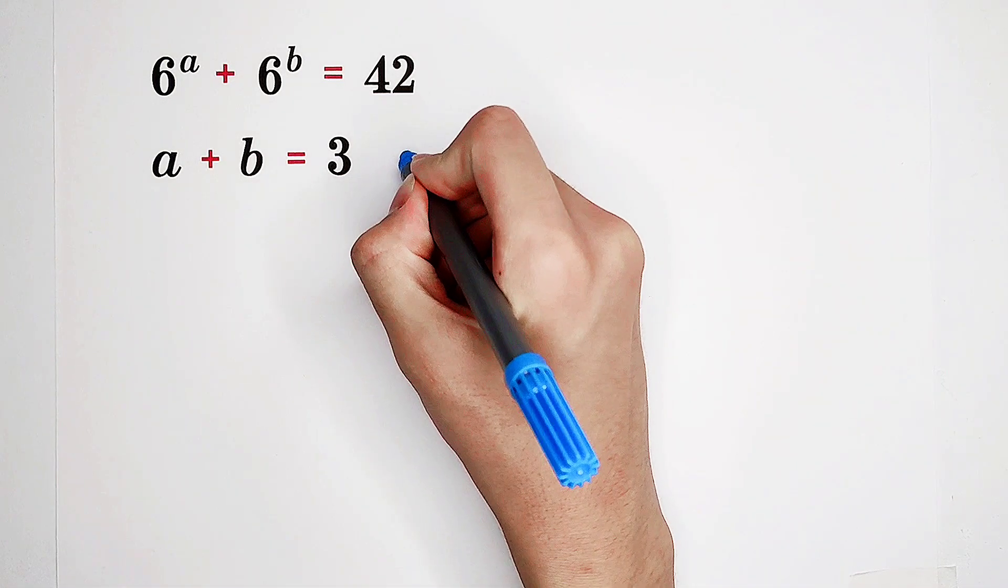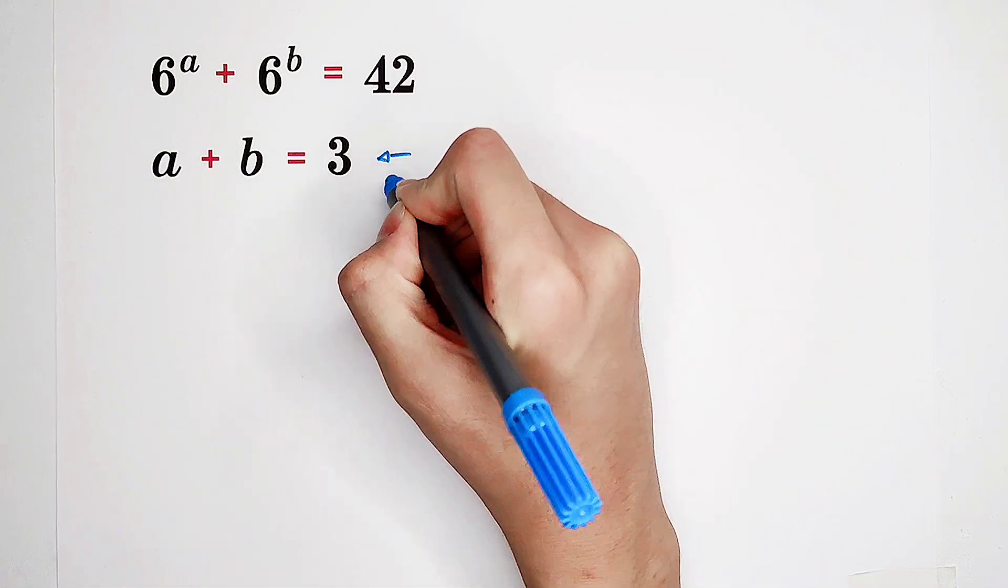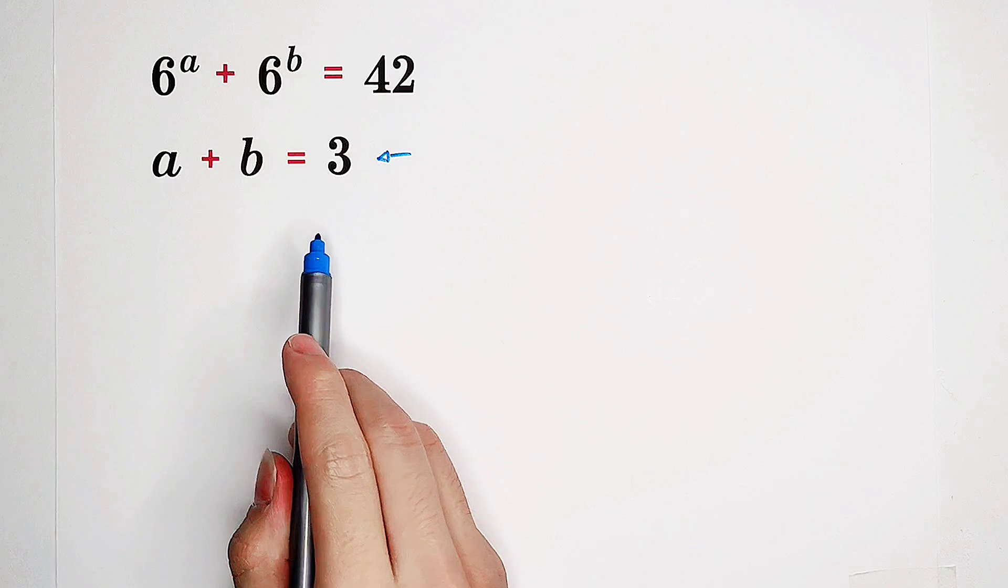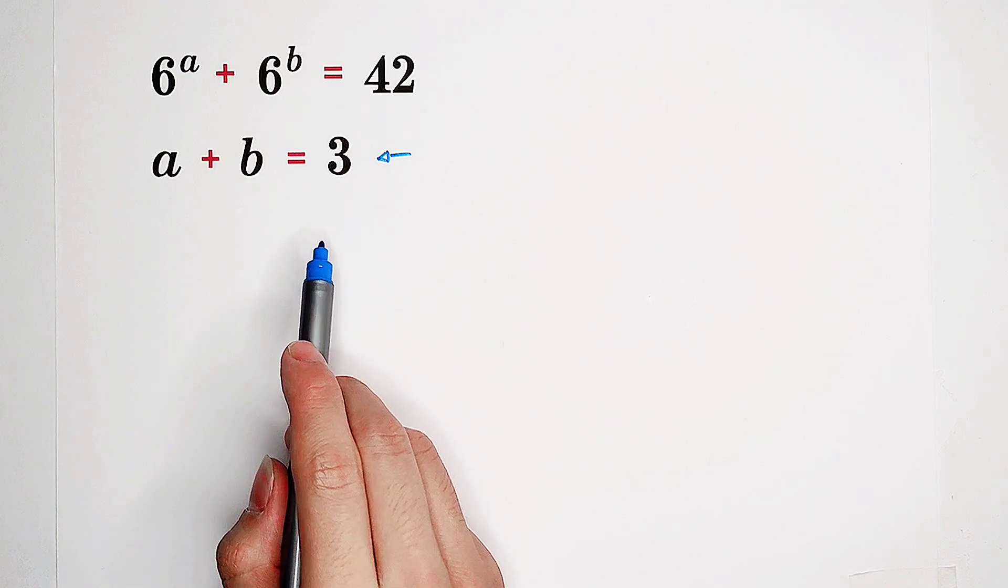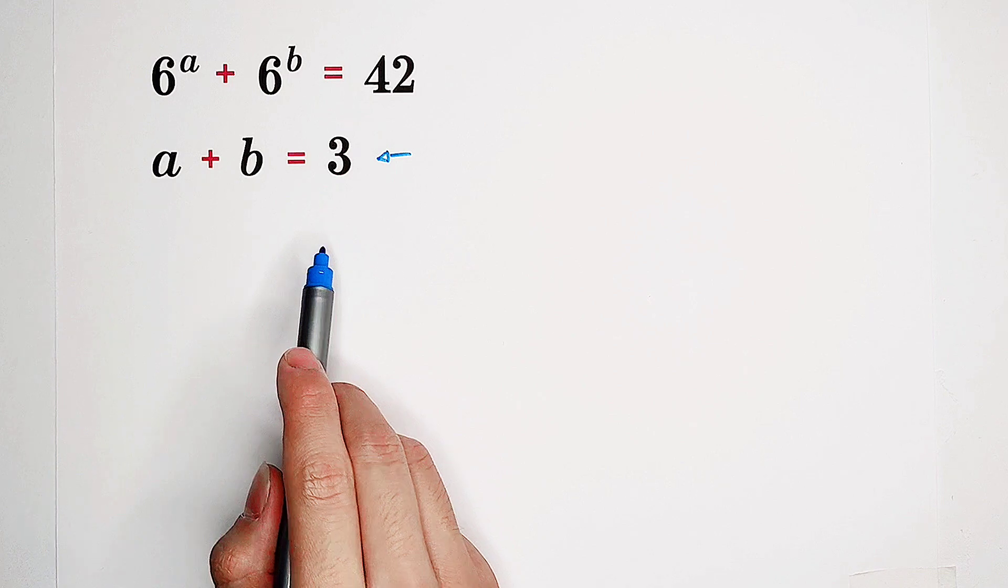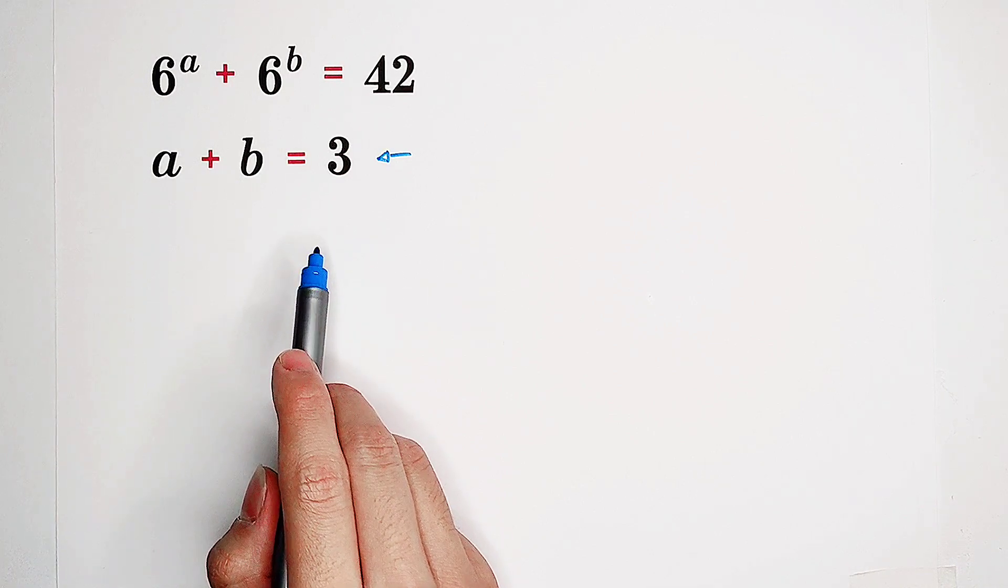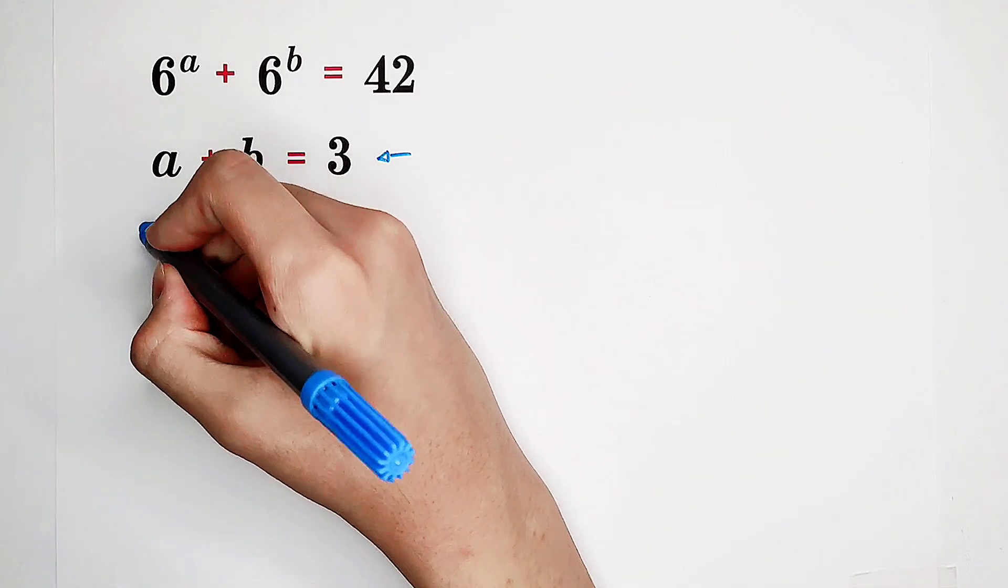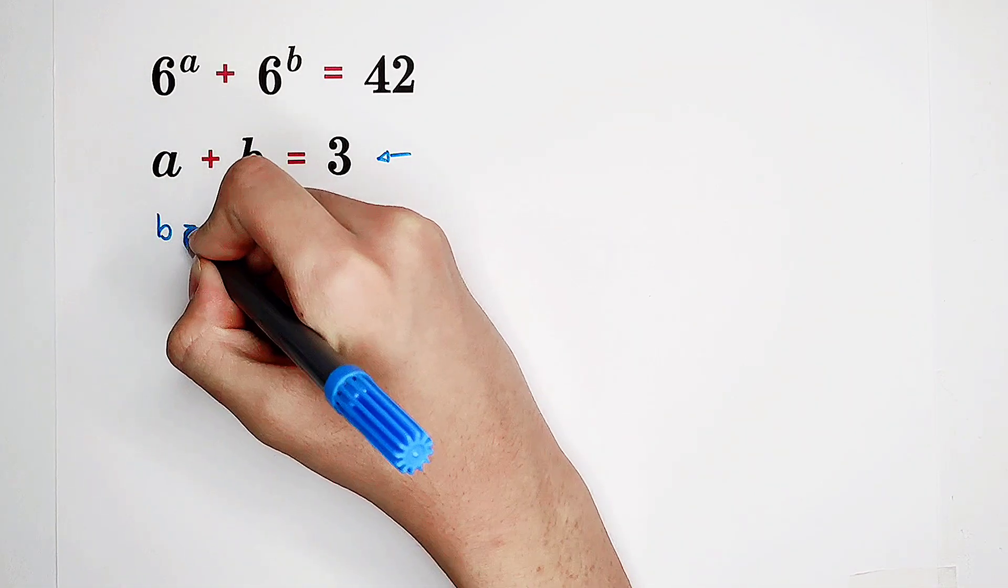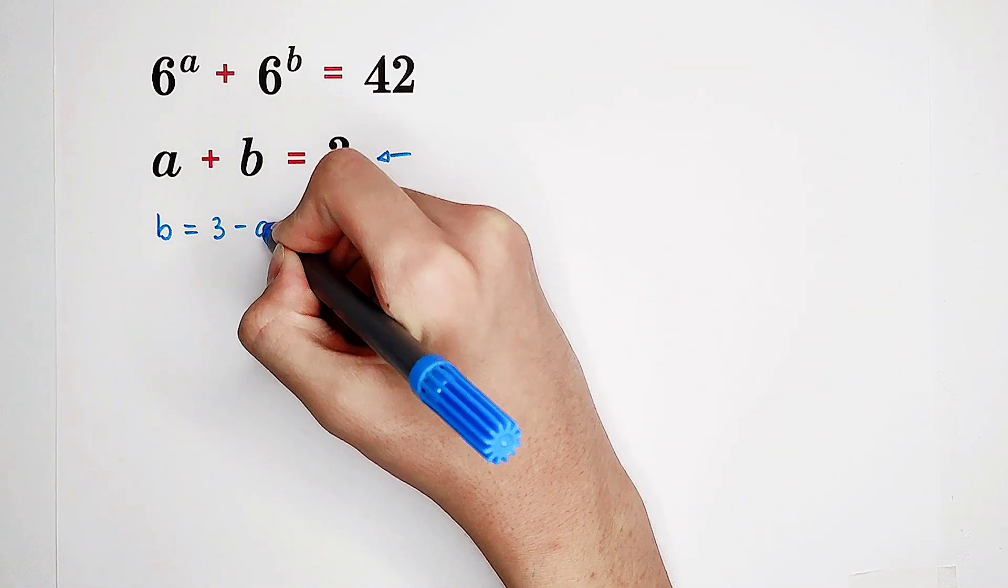Of course, we have to start with the second equation. Why? Because A plus B is three. This relationship is so simple. So now, we can directly get that B is three minus A.